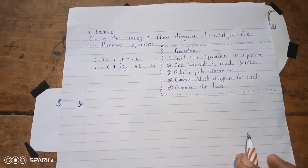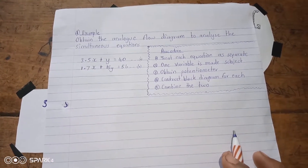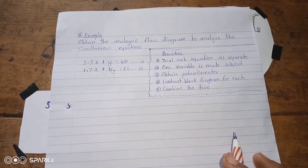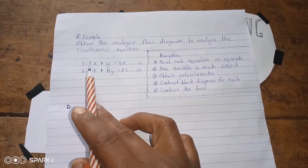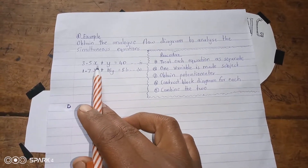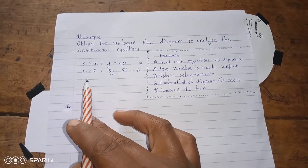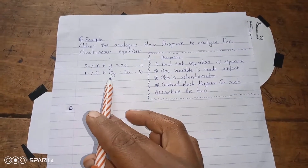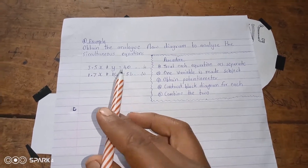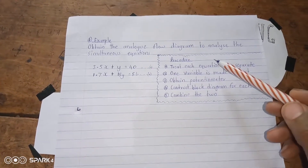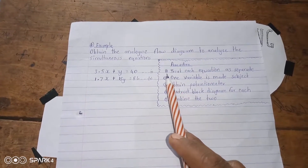We will combine the two blocks to come up with one single block diagram. The case in hand is: obtain the analog flow diagram to analyze the simultaneous equations given below — 3.5x plus y equals 40, and 1.7x plus 15y equals 56.